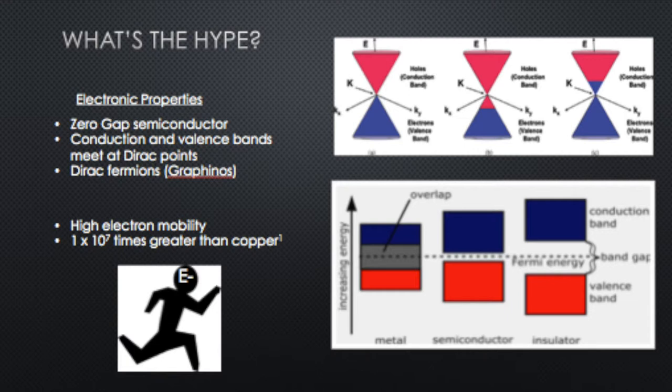This is generally how we think about metals, semiconductors, and insulators based on their energy. As we can see in the semiconductor case, it has a very small band gap energy—the distance between the valence band and the conduction band is very small. In the case of graphene, that band gap energy is actually zero. They don't overlap like they would in a metal, but they're just touching, which gives very interesting properties.